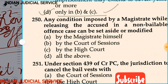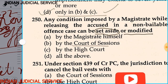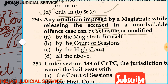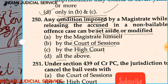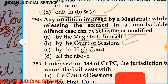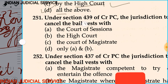Question number 250: Any condition imposed by a magistrate while releasing the accused in a non-bailable offence can be set aside or modified by — option A: the magistrate himself, option B: the court of session, option C: the high court, option D: all of the above. All three courts have the power to set aside or modify the condition. The answer is option D.